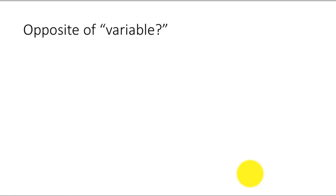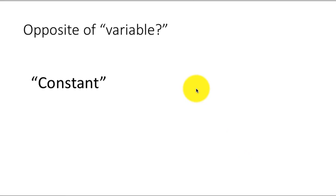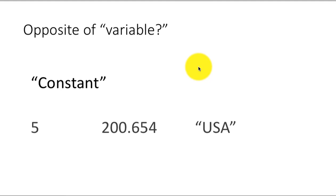We have looked at the idea of a variable. Now what is the opposite of variable? The opposite of variable in general programming languages is called a constant. Obviously a variable is something that varies, while a constant is something that is constant or does not vary. So examples of constants would be 5, the number 5.